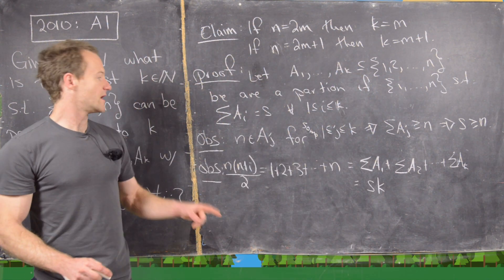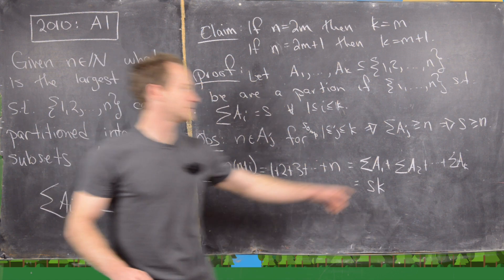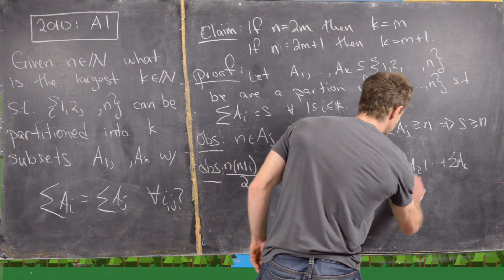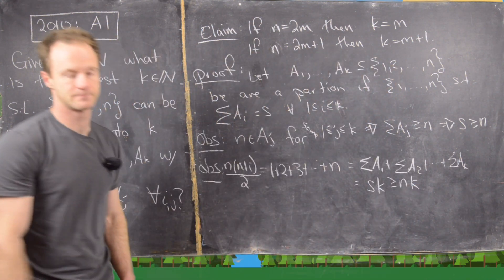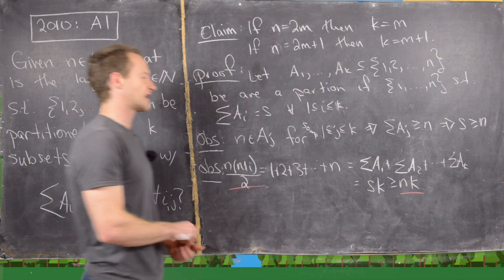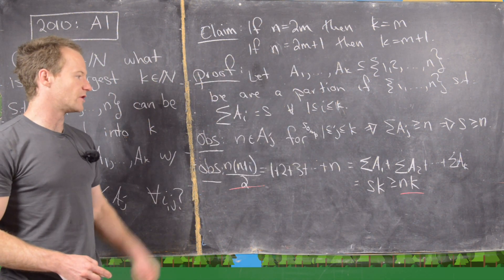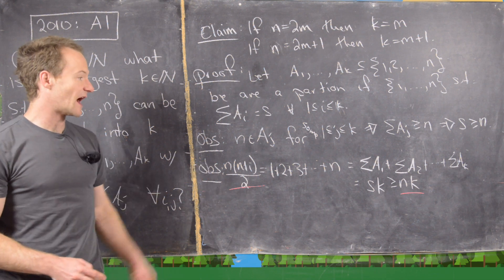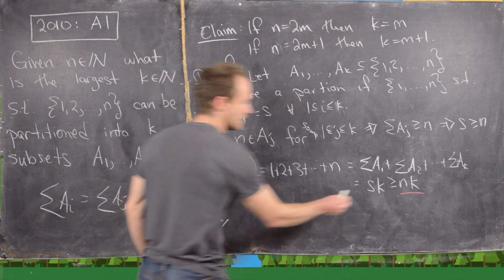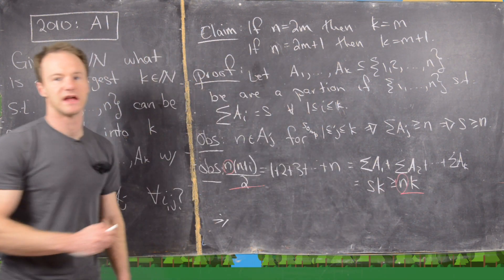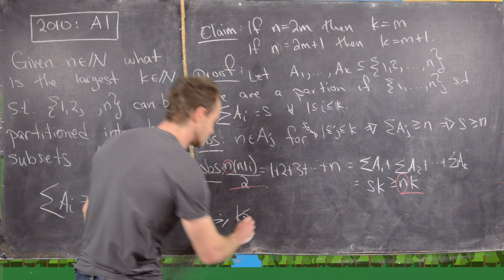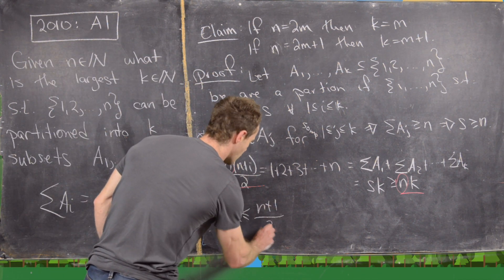By our first observation, S is at least N, so N(N+1)/2 equals S·K is at least N·K. Looking at the extreme left and right sides of this inequality and dividing both sides by N, we get K is less than or equal to (N+1)/2.